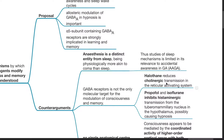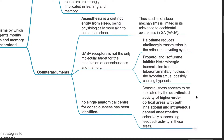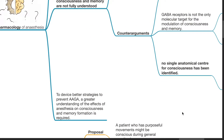Halothane reduces cholinergic transmission in the reticular activating system. Propofol and isoflurane inhibit histaminergic transmission from the tuberomammillary nucleus in the hypothalamus, possibly causing hypnosis. There is no single anatomical centre for consciousness that has been identified. Consciousness appears to be mediated by the coordinated activity of higher-order cortical areas, with both inhalational and intravenous general anesthetics selectively suppressing feedback activity in these areas. To devise better strategies to prevent AAGA, a greater understanding of the effects of anesthesia on consciousness and memory formation is required.